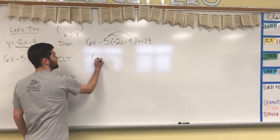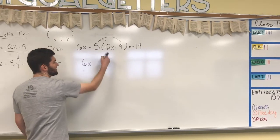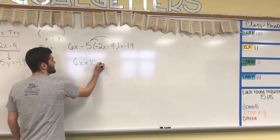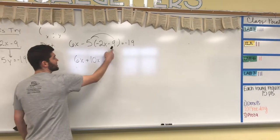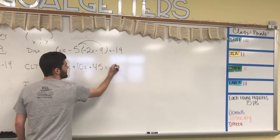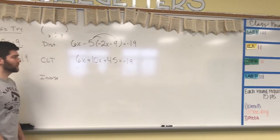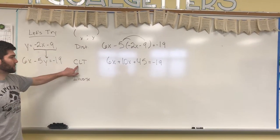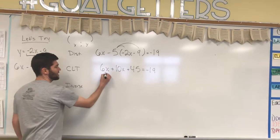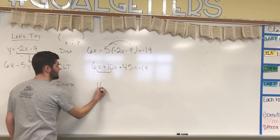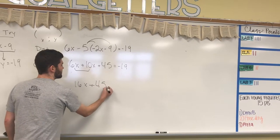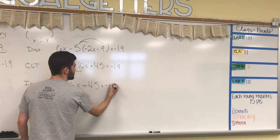The first thing I'm doing is I'm going to distribute this negative 5 times everything inside. So I've got 6x. Negative 5 times negative 2x is positive 10x. Negative 5 times negative 9 is positive 45 equals negative 19. I did my distribution. Next step is combine like terms, which gives me 16x plus 45 equals negative 19.